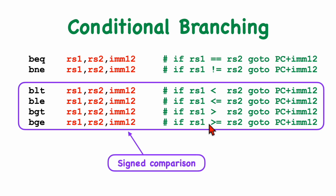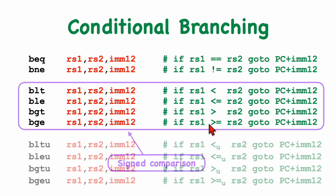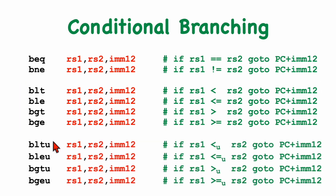We also have a number of branch instructions that do unsigned testing: branch less than unsigned, less than or equal unsigned, and so on. These perform the test assuming that the values in the two registers are unsigned values.